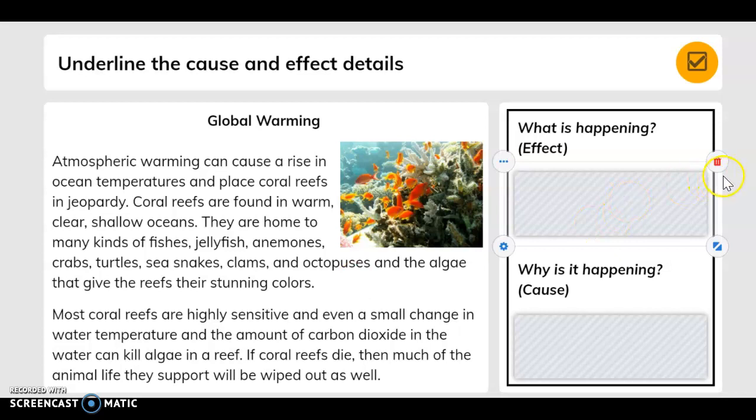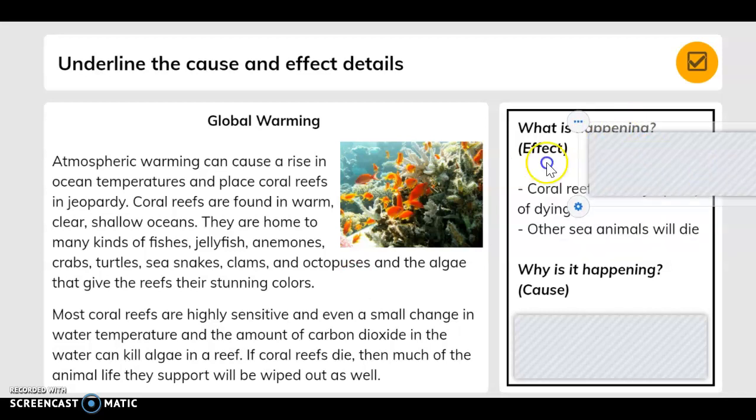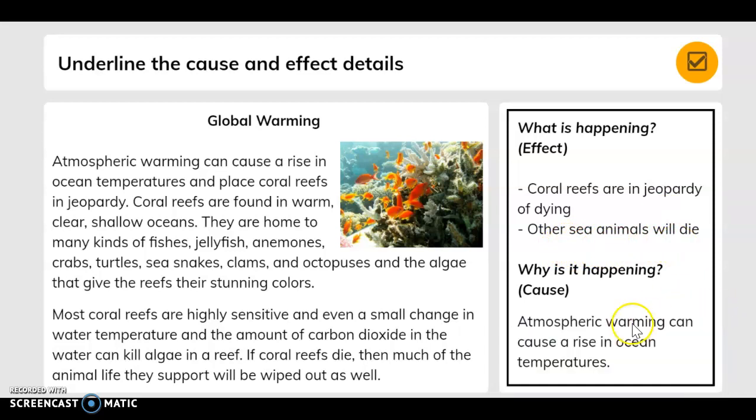So, what is happening? The effect. Coral reefs are in jeopardy of dying and other sea animals will die. Why is it happening? Because atmospheric warming can cause a rise in ocean temperatures.